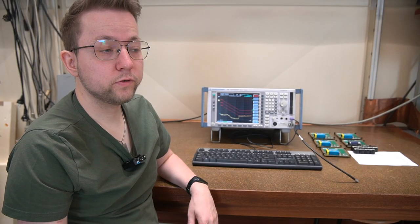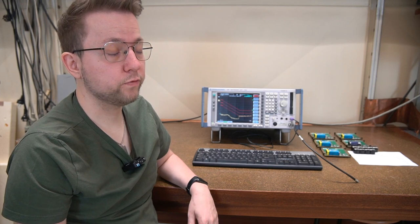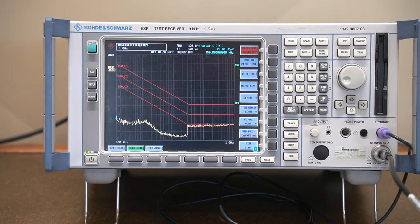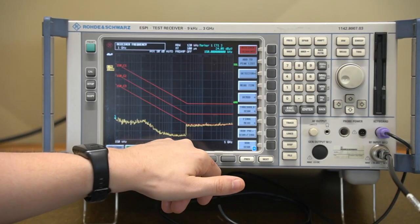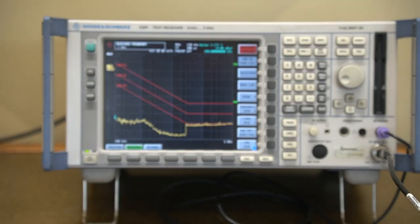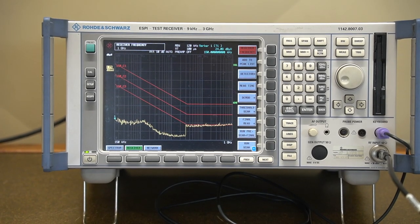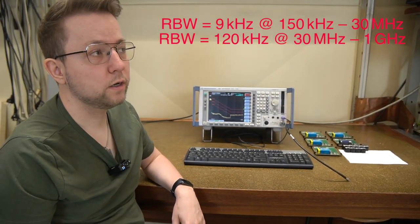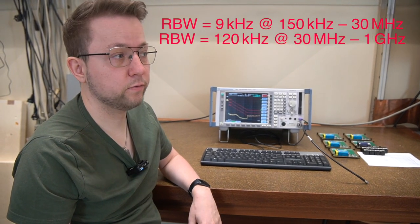So for our first measurement we basically measure the noise floor of the EMI receiver. This is done with our cable being not connected to anything. You can see here there is a drop for the range up until 30 megahertz. From there on it is switching into a different range where we have smaller or larger increments so the measurement doesn't take forever.